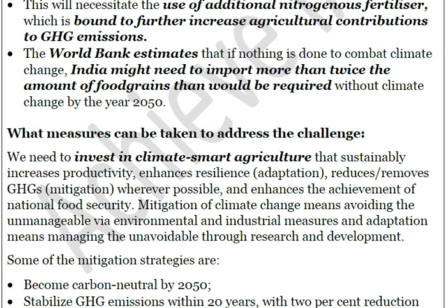Now let's see what measures can be taken to address the challenge. The most important suggestion is to invest in climate smart agriculture. Climate smart agriculture is agriculture that sustainably increases production, enhances resilience through adaptation, and reduces or removes greenhouse gases. It must also be carbon neutral agriculture, demanding reduction and removal of greenhouse gases wherever possible, with the main goal of achieving national food security.